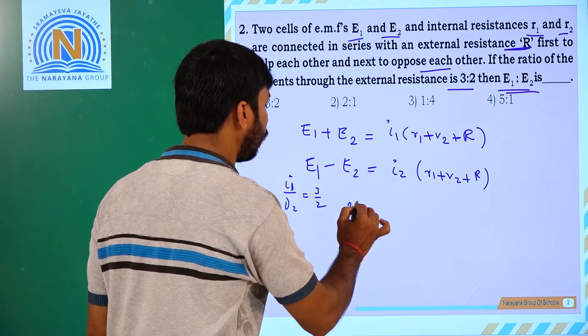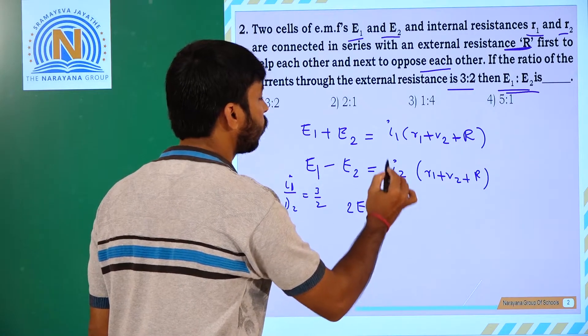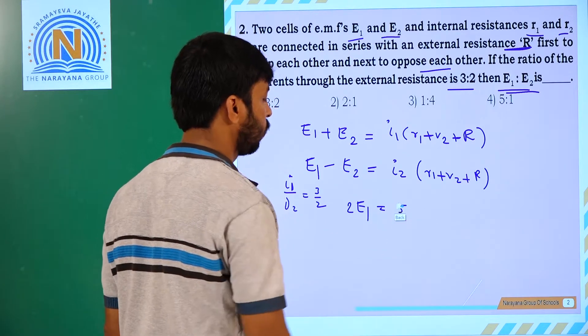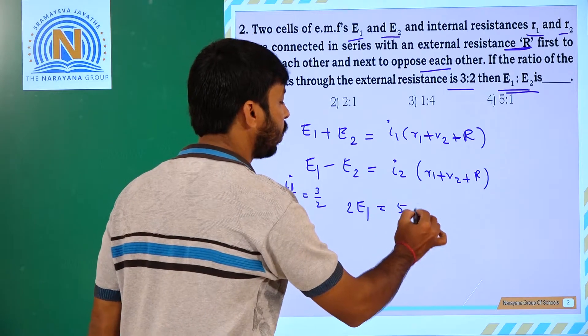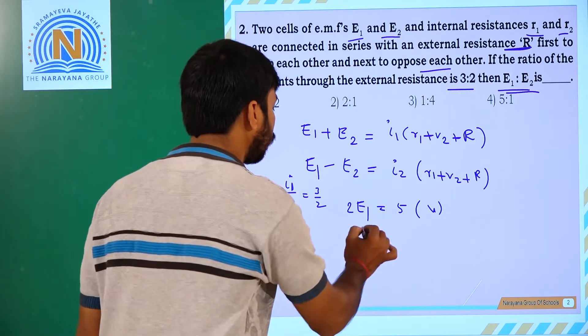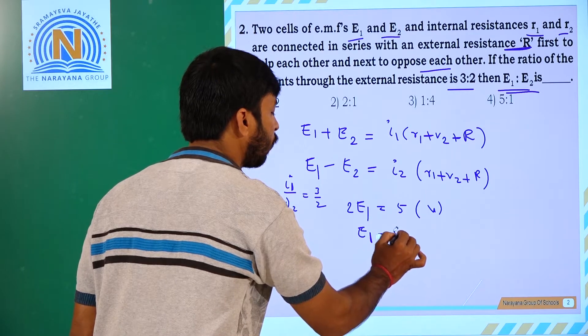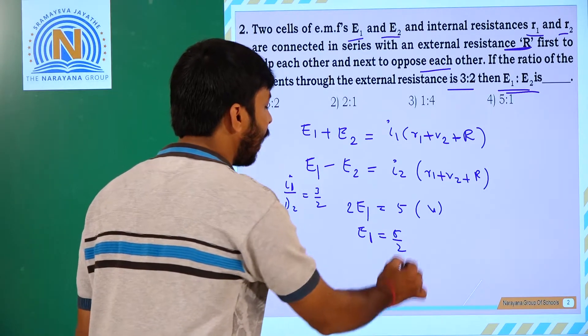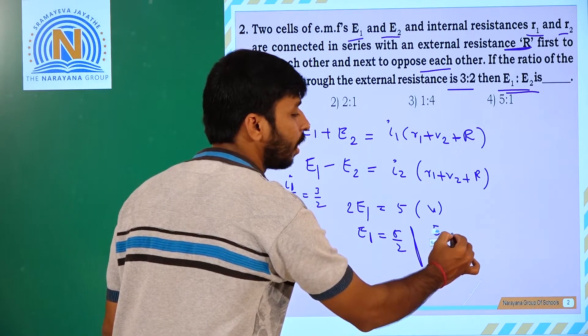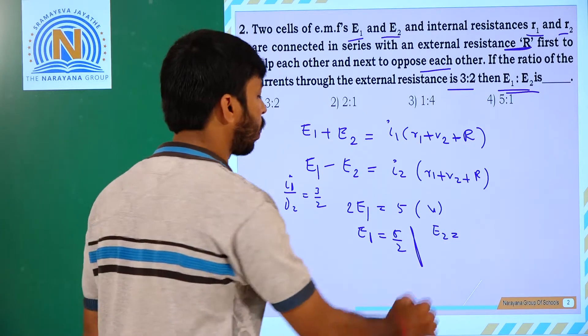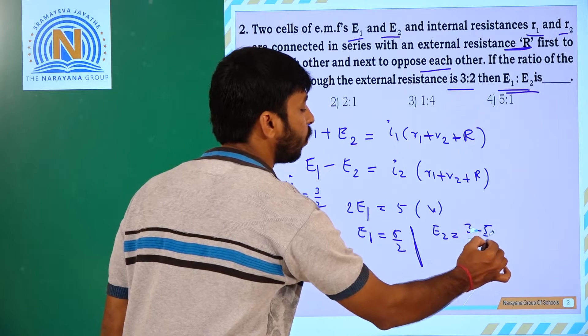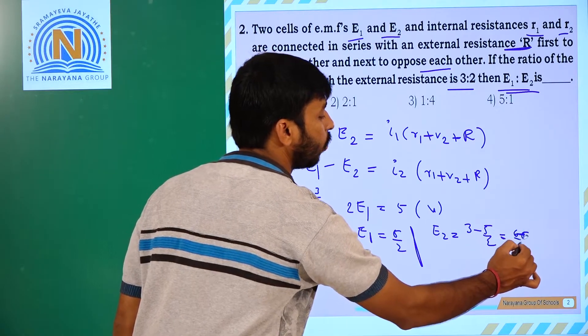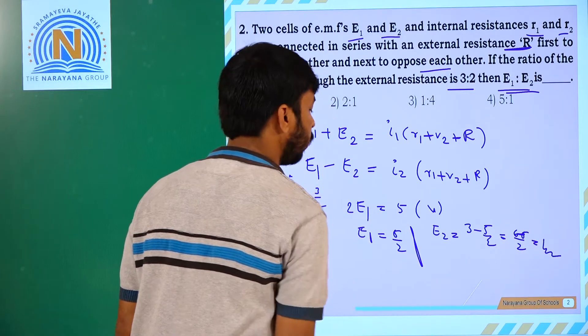2E1 is equal to 3 plus 2, that is equal to 5. So E1 is equal to 5 by 2. And E2 is equal to 3 minus 5 by 2, that is 6 minus 5 by 2, equal to 1 by 2.